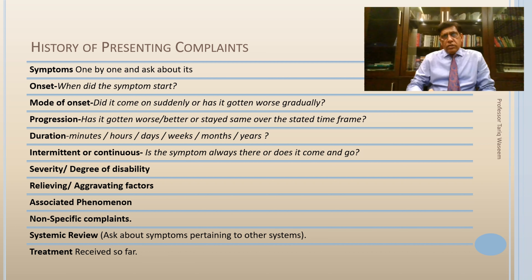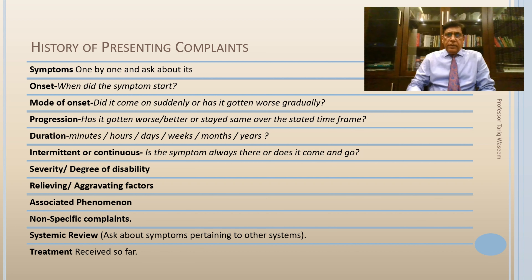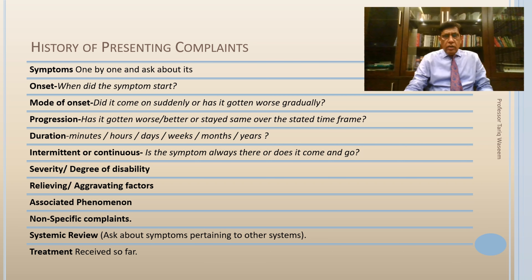Then perform a systemic review — the patient has fever, cough, and sputum, but may also have, say, difficulty in urination from an enlarged prostate or a rash he thinks is not significant but which may bear on the diagnosis. Ask about symptoms related to other systems as well. The third component of the history of presenting illness is: has any treatment been received for the current problem? If so, it may have positive or negative bearing on the current status.